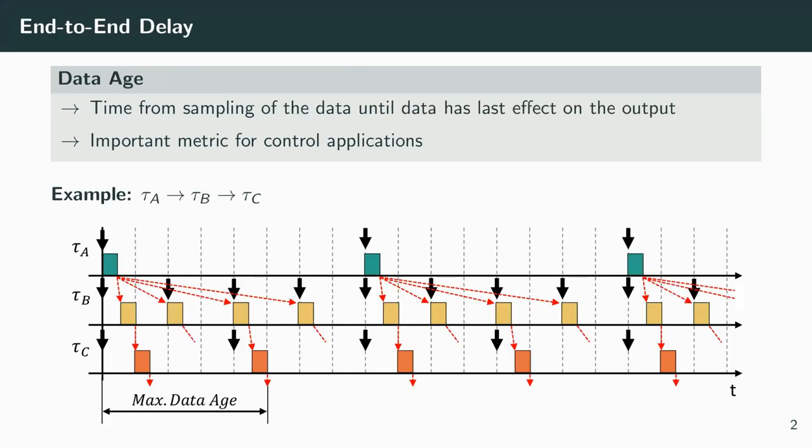However, as these cause-effect chains are often part of a control application, the end-to-end delay of such chains is crucial for application performance. Guaranteeing a tight upper bound from the beginning of the input task to the end of the output task is often more important than meeting the task deadlines themselves.